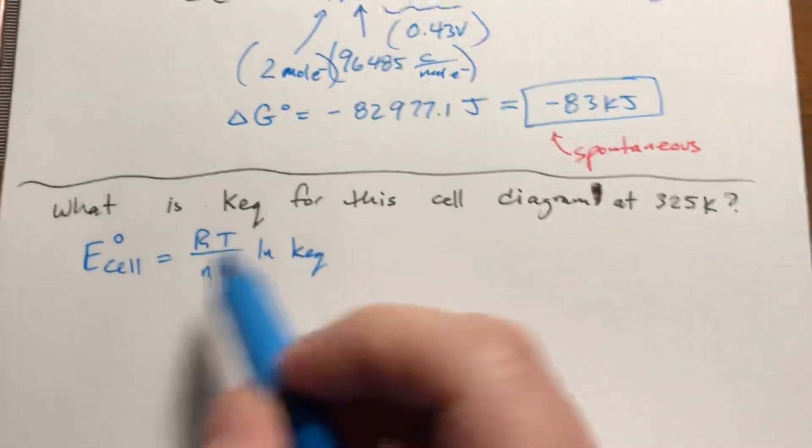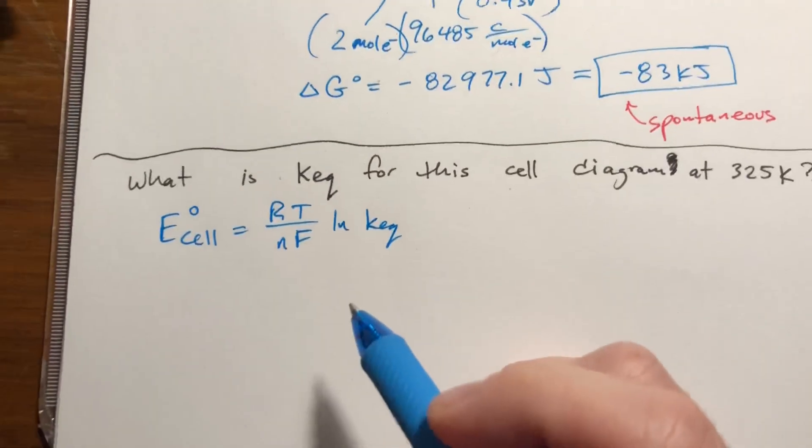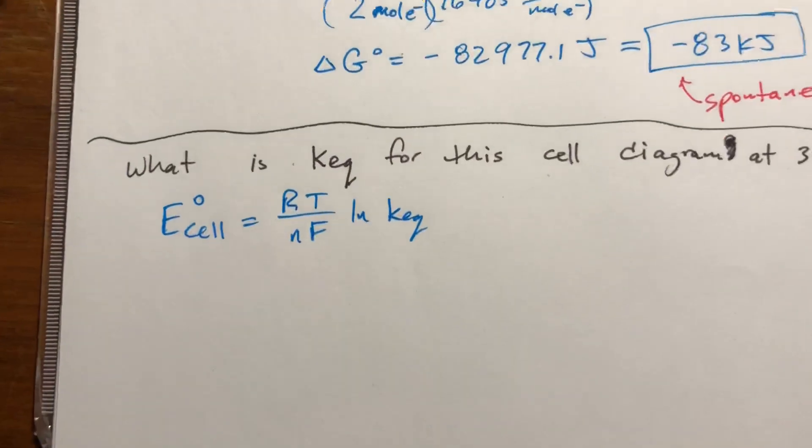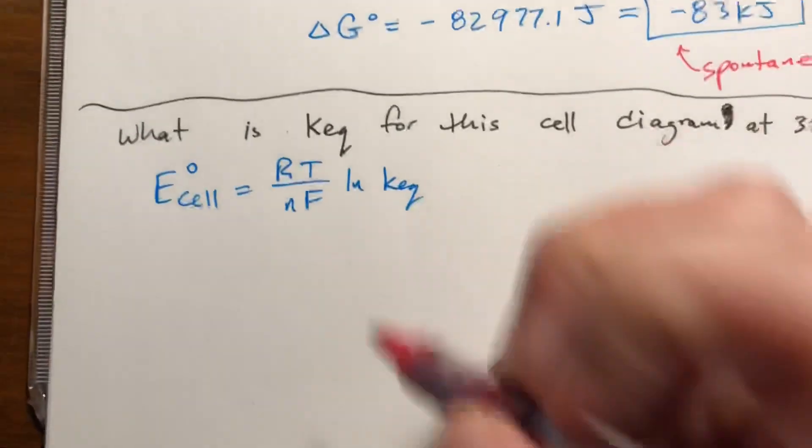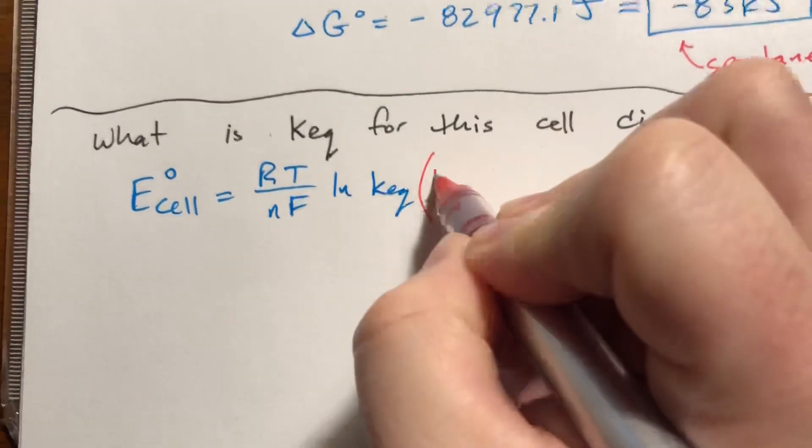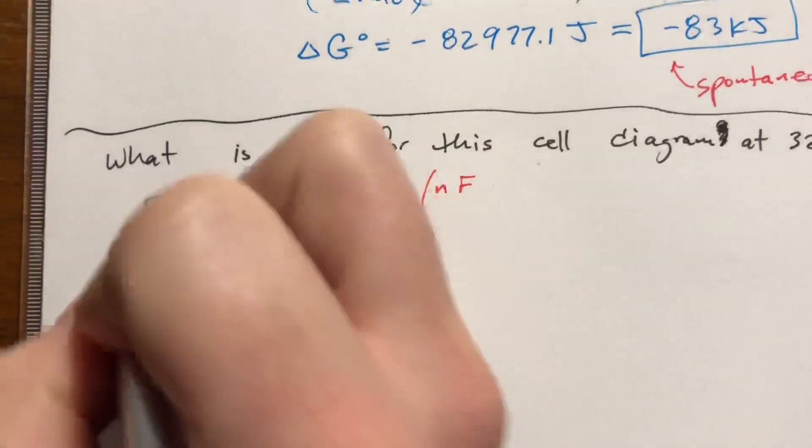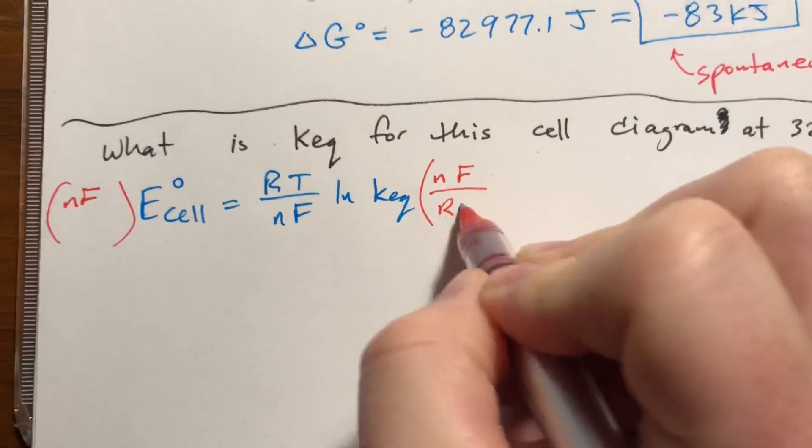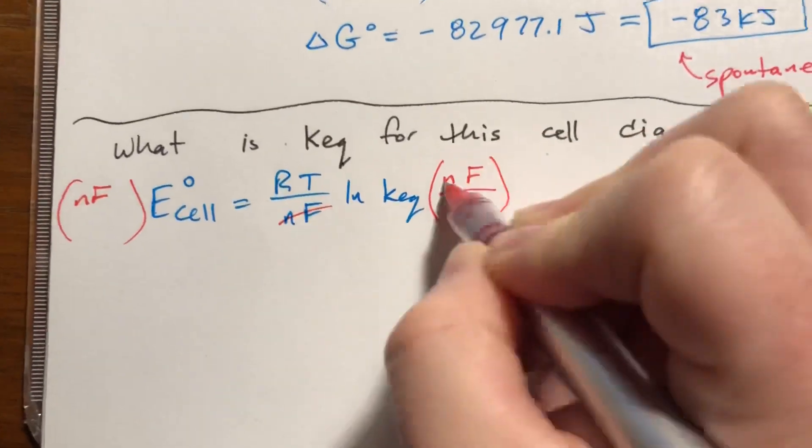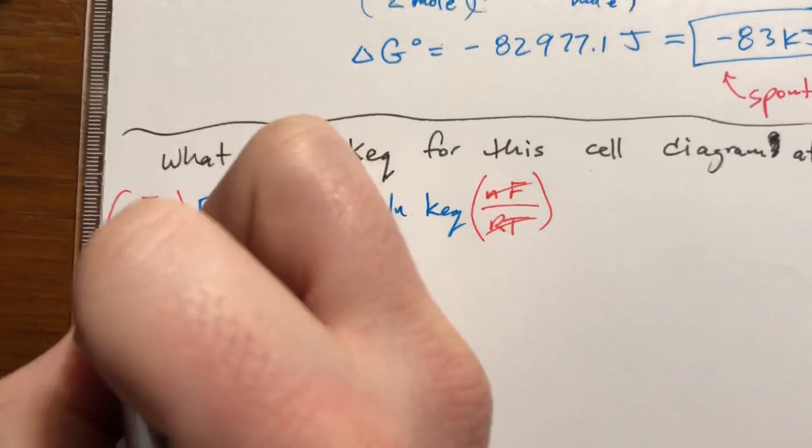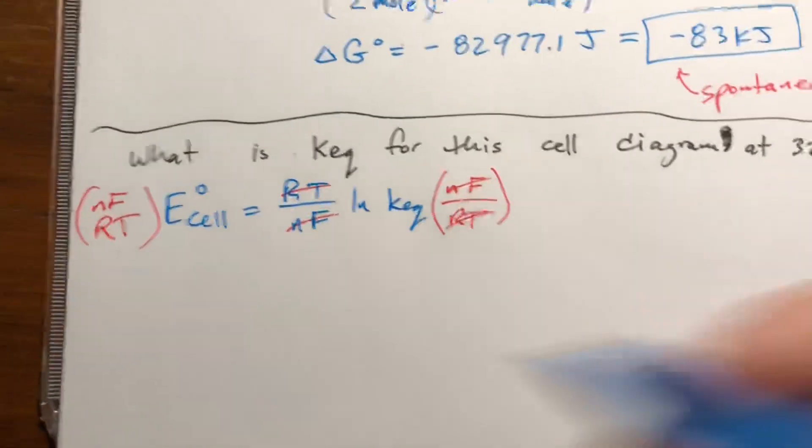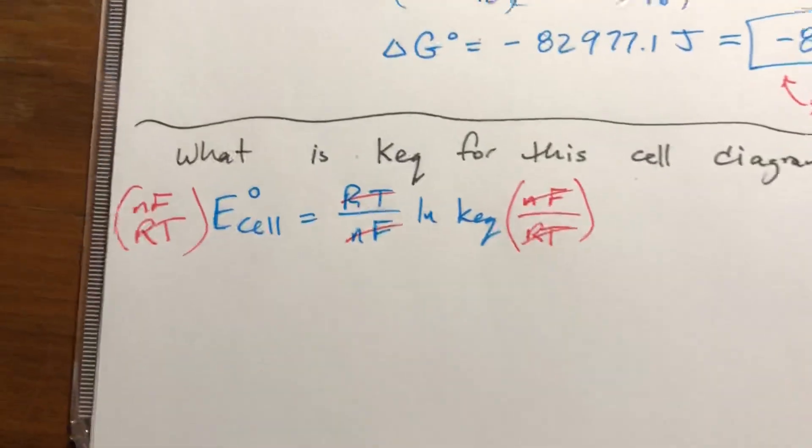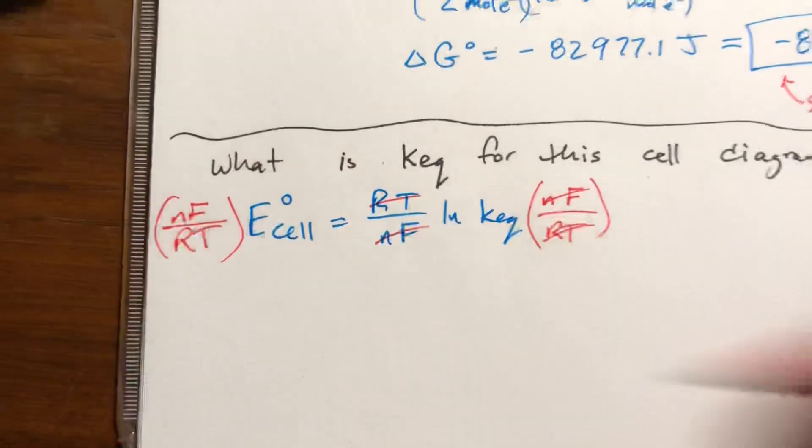So essentially we're just solving, rearranging this for Keq. We can't get rid of this natural log until we get rid of all this stuff. So I'm going to multiply N and F on both sides. R and T are going to be divided off of both sides, so that cancels. I'm going to rewrite this so it looks a little prettier.